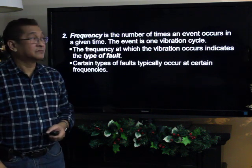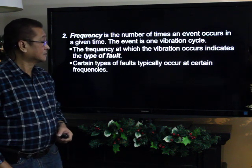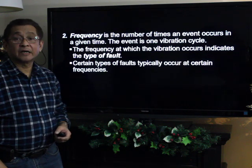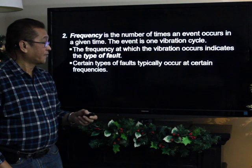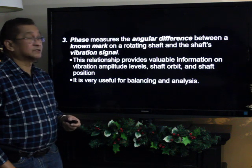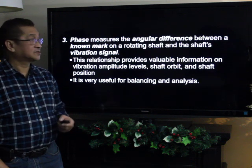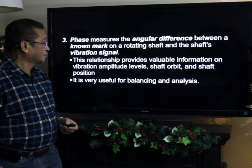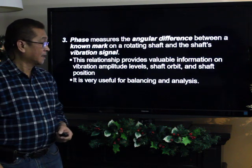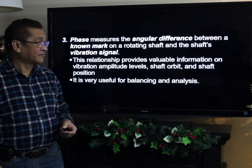Frequency is the number of times an event occurs in a given time frame — the event being one vibration cycle. The frequency at which vibration occurs indicates the type of fault, as certain types of faults typically occur at certain frequencies. Phase measures the angular difference between a known mark on the rotating shaft and the shaft's vibration signal. This relationship provides valuable information on amplitude levels, shaft orbit, and shaft positioning, and it is very useful for balancing and vibration analysis.